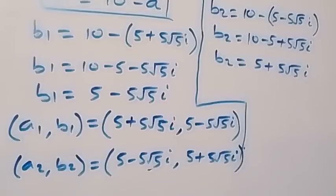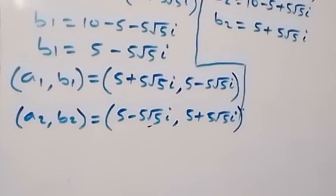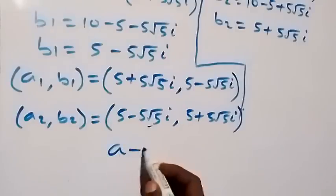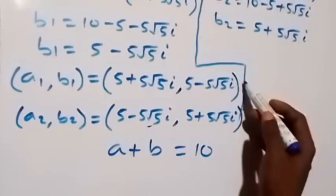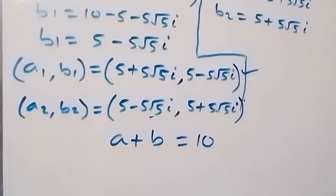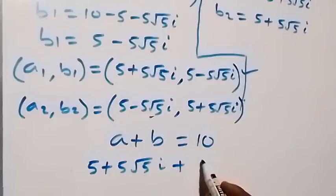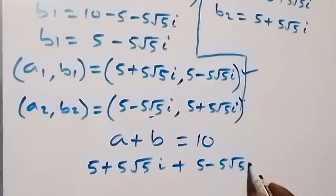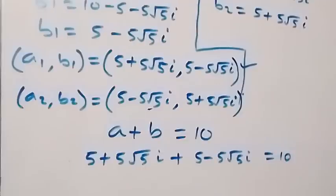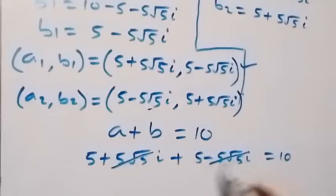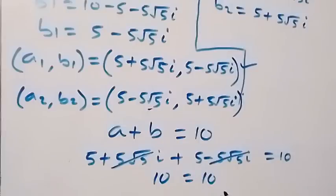Let's check if these satisfy the given equations. From equation 1, A plus B equals 10. Using the first solution set: (5 plus 5·root(5)·i) plus (5 minus 5·root(5)·i) — the imaginary parts cancel out, and we have 5 plus 5, which equals 10. Left-hand side equals right-hand side, so it satisfies equation 1.